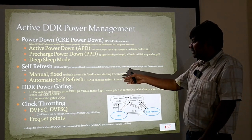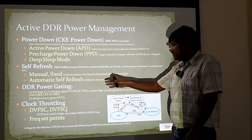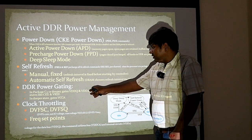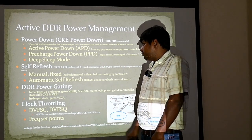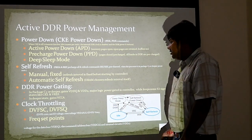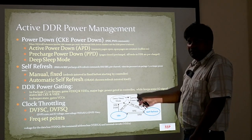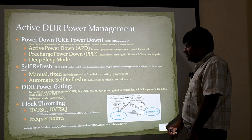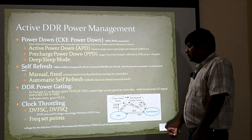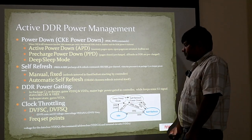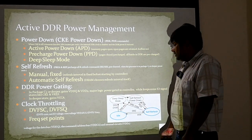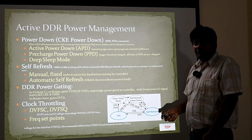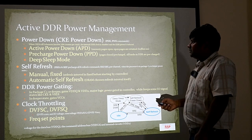There are deeper DDR power-gating features available when the system is in package C3 or deeper states. In these states it gates VDDQ — the data bus voltage — and VDD2, which is the core voltage. VCC_CA is the command and address voltage. In deeper power states these voltage rails are gated. There is also a clock throttling feature available — DVFS for C and Q, where C refers to core voltage (VDD2) and Q refers to the data channel voltage (VDDQ). This was a top-level overview of DDR power management and the different modes available.